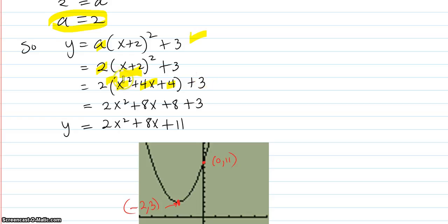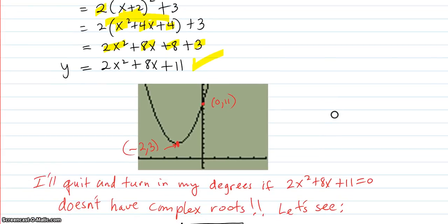Then you distribute the 2 in. You get 2x² plus 8x, plus the 8, plus the 3. 8 plus 3 is 11. So this is your equation. Then we graph it.